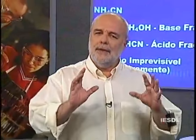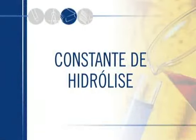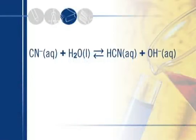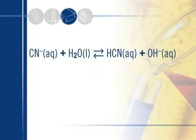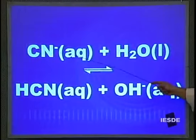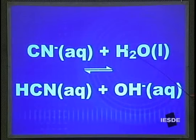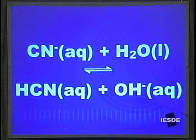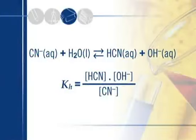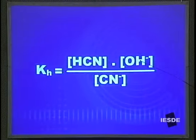Isso vai nos possibilitar fazer um tratamento quantitativo da hidrólise: a constante de hidrólise. No primeiro exemplo, vamos supor a hidrólise do radical cianeto. Cianeto aquoso mais água líquida, fornecendo HCN e hidroxila. Uma passagem de um próton da água para o CN⁻, formando HCN e hidroxila. A constante para essa reação se chamará Kh e será: concentração de HCN vezes concentração de hidroxila sobre concentração de cianeto.